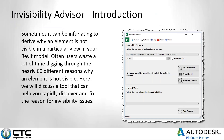Oftentimes I get calls from clients who are frustrated trying to figure out invisibility issues in their projects — they can't figure out why something in the Revit model is not showing in a particular view. Just the other day I was working with a client and we spent 20 minutes on this exact problem, then we used Invisibility Advisor and solved it in less than five minutes.